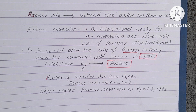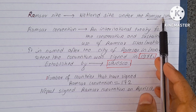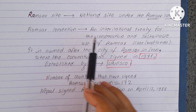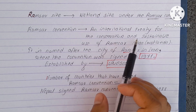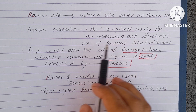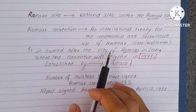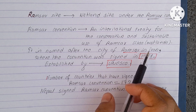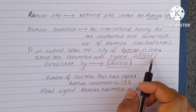Guys, before beginning, let us understand what a Ramsar Site is. A Ramsar Site is the wetland site under the Ramsar Convention. The Ramsar Convention is an international treaty for the conservation and sustainable use of wetlands. It is named after the city of Ramsar in Iran, where the convention was signed in 1971.